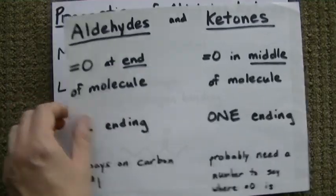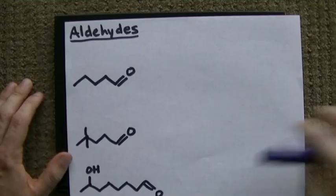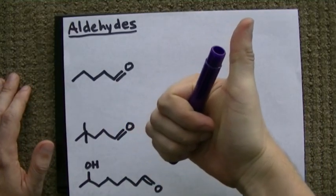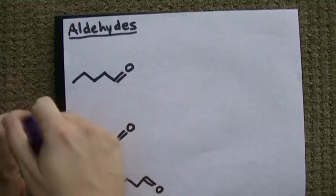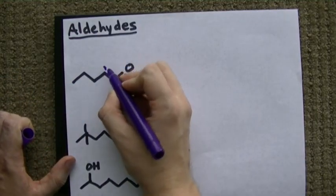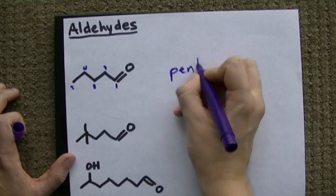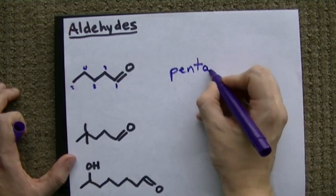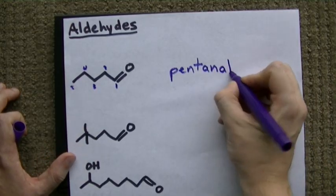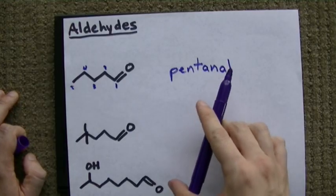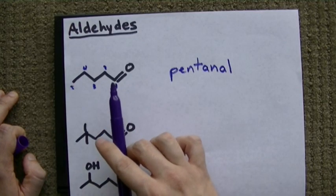Let's try some of these. Let's try naming some aldehydes first. Here's one. Let's count the longest carbon chain. And then we'll add an AL ending. One, two, three, four, five. That's pent for five. It's all single bonds. And it's an aldehyde. Again, we don't need a number to say where the aldehyde is because it has to be at the very beginning. It has to be on carbon one.